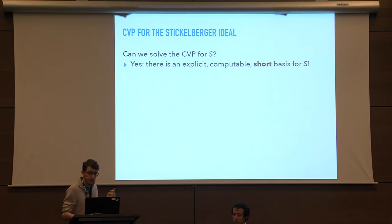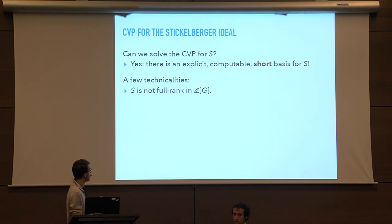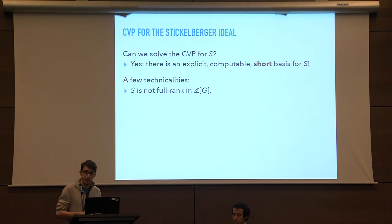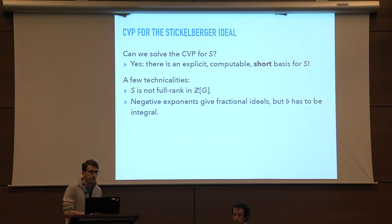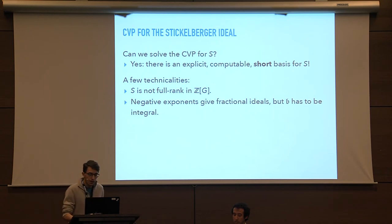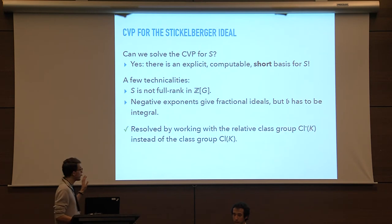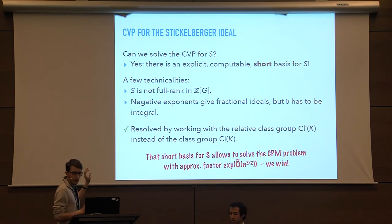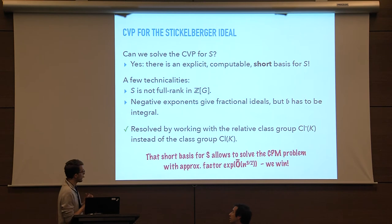A few technicalities remain. The first is that the Stickelberger ideal is not full rank in the group ring, so you cannot directly find the closest vector — you first need to expand the ideal to form a larger lattice of relations that annihilate the class group. The second technicality, already mentioned, is that negative exponents may appear, giving fractional ideals which you don't want. These technicalities are resolved by working with the relative class group CL⁻(K) instead of the full class group. The short basis for the Stickelberger ideal then allows solving the close principal multiple problem with an approximation factor exponential in n to the three-halves, which is exactly what we needed.